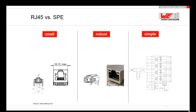A big difference is also the filter design. On the right-hand side you can see the filter design for 1000BASE-T Ethernet. We have four channels, meaning four transformers, four common mode chokes, and a Bob Smith termination — a ground termination. This is quite a large schematic. In contrast, the schematic for single-pair Ethernet is much smaller.